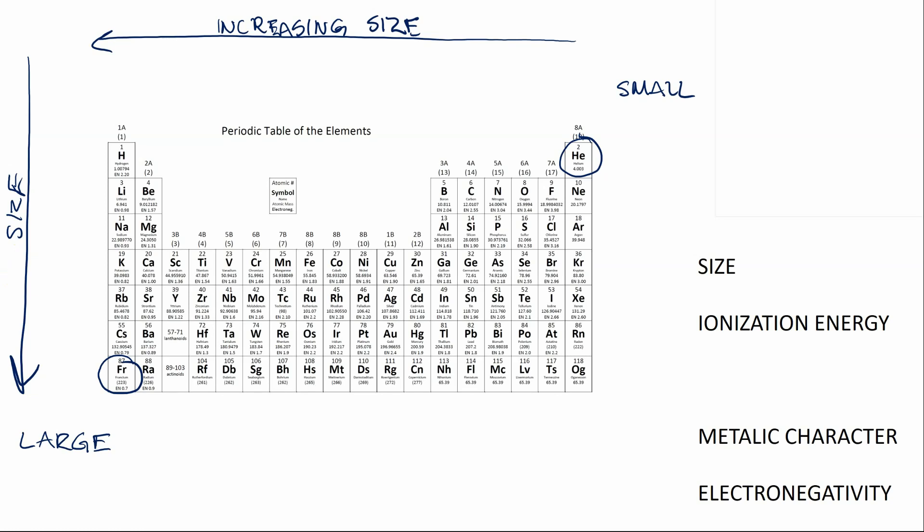Ionization energy is the amount of energy that's required to take an element and convert it to a single positive charge by removing one electron. Technically this is the first ionization energy. There's a second ionization energy of the energy required to remove a second and a third for a third.